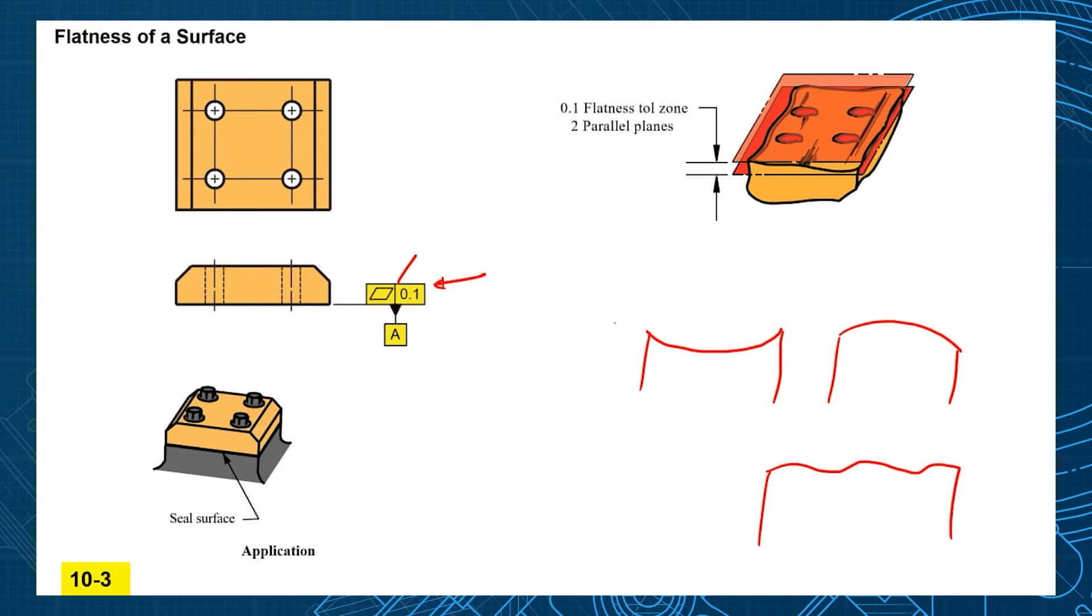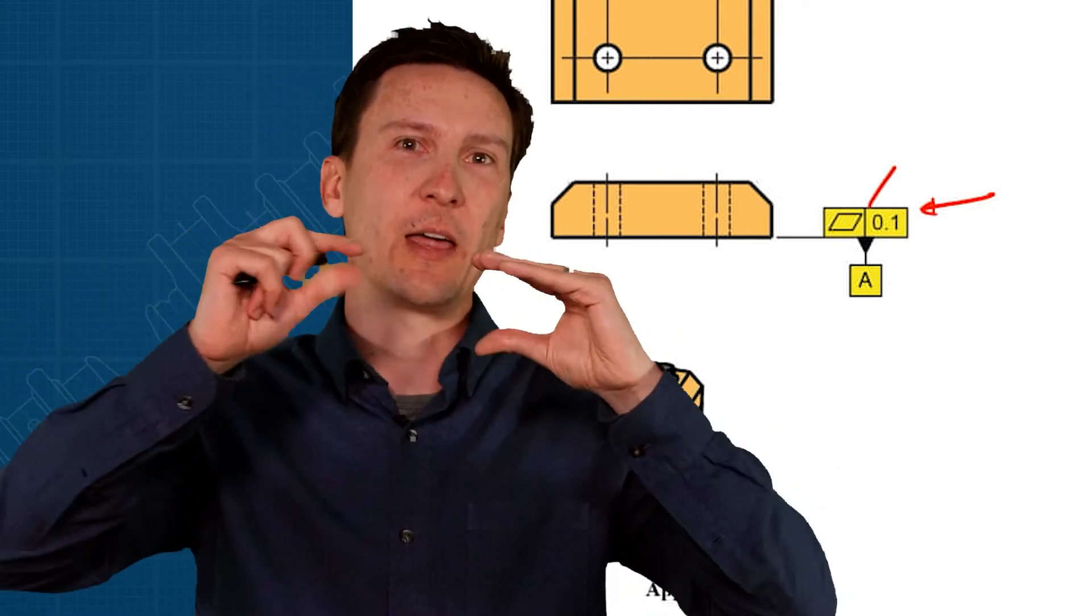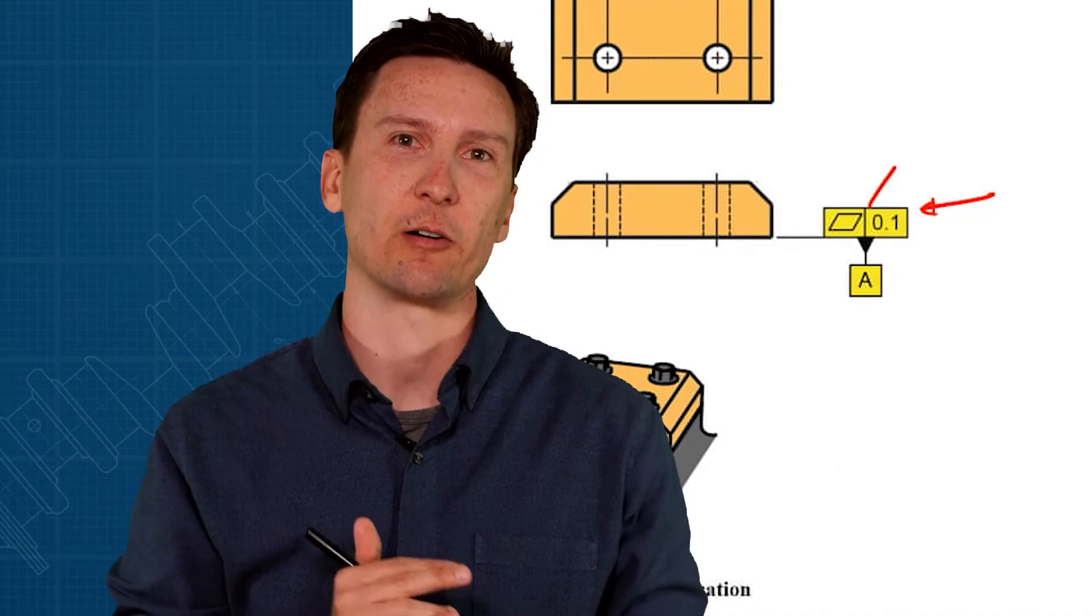Look at the tolerance zone of two parallel planes - two parallel planes, or two parallel planes. The other one that's a little bit harder to explain is the potato chip effect and that would also be maintained by the flatness tolerance.